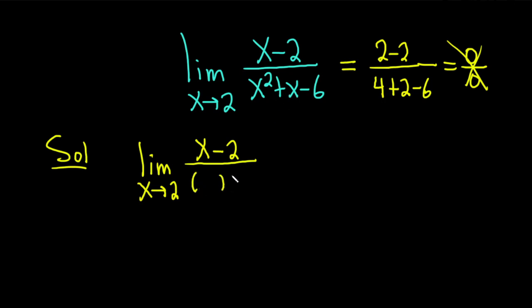So x and x, because x times x is x squared. Now we need two numbers that multiply to negative 6 but add to 1.